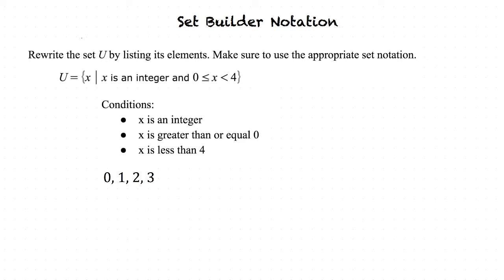So our final answer is 0, 1, 2, and 3, written in set notation as u equals {0, 1, 2, 3}. To summarize: we first read the problem and list the conditions, then find the numbers that satisfy those conditions, and list the result in set notation. That is correct.